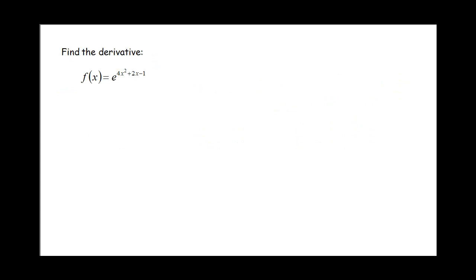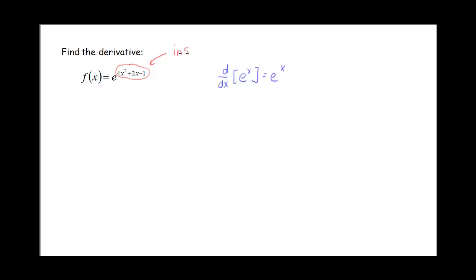Let's look at an example. We've got our function e to the 4x squared plus 2x minus 1. This looks like an exponential function, so we're probably going to use the rule that d/dx of e to the x gives us e to the x. But inside the exponent, I've got something more complicated than just plain x — I've got 4x squared plus 2x minus 1. So we have layers on our function, which means we're going to need to use the chain rule in addition to this exponential rule.